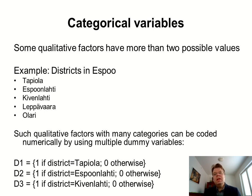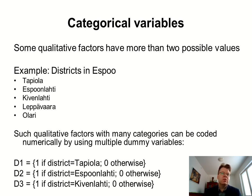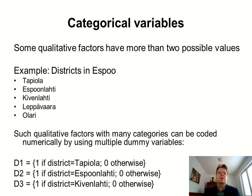Similar to the elevator case, we can use dummy variables to code this in a binary 0/1 variable. We can have a dummy variable D1 that equals 1 if the apartment is located in Tapiola district and 0 otherwise. Then a second dummy variable D2 equals 1 if the apartment is in Espoonlahti and 0 otherwise, and so on. Nothing prevents us from using multiple dummy variables when we have multiple categories.